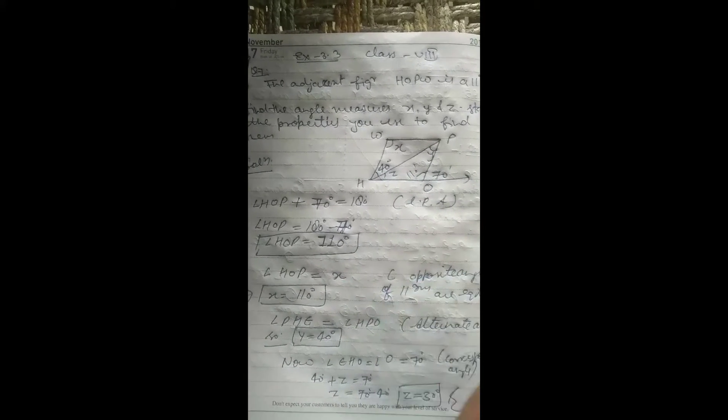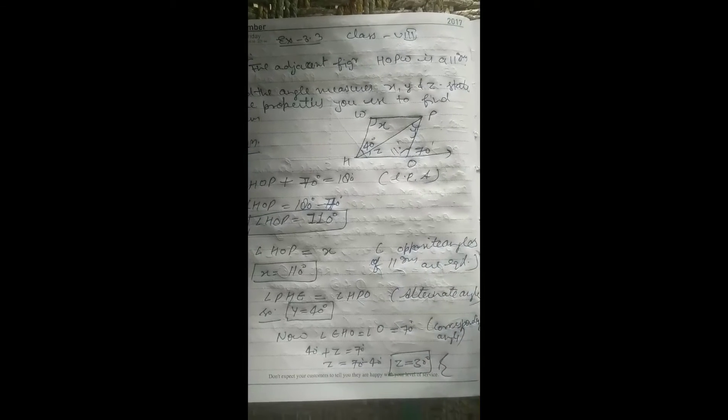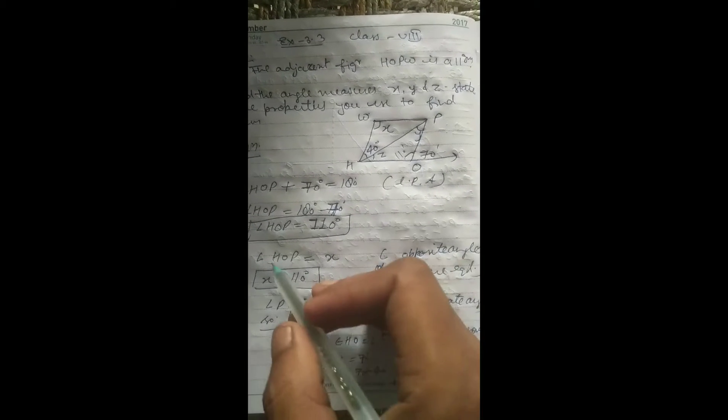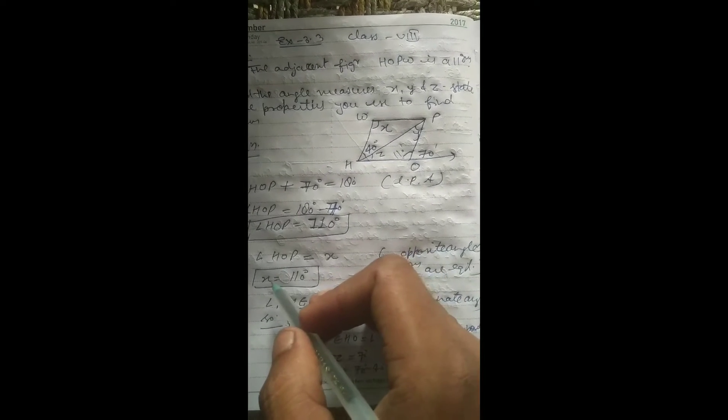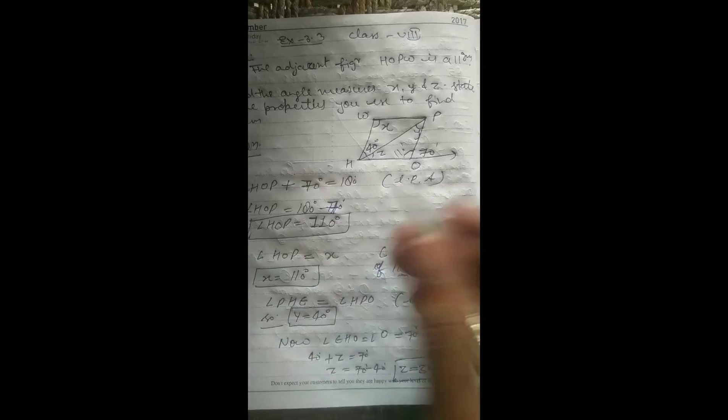HOP equals x because opposite angles of a parallelogram are equal. The value of HOP is x, so x equals 110 degrees.